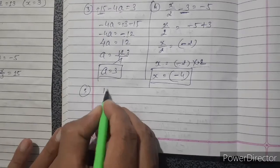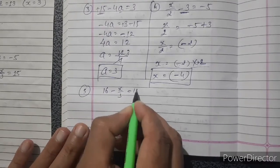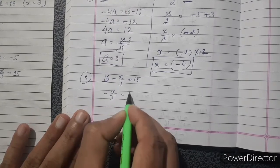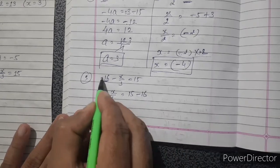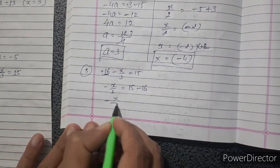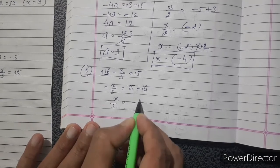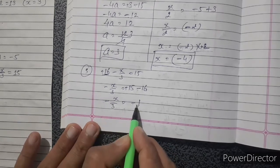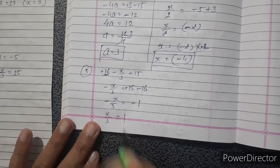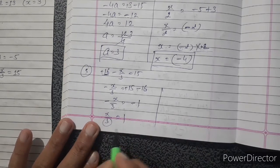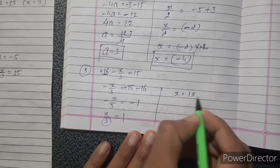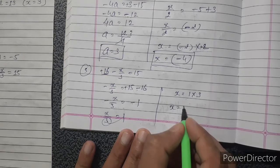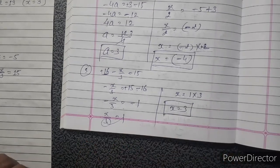Fifth: 16 minus x divided by 3 equals 15. Change the side of 16: minus x divided by 3 equals 15 minus 16, giving minus x divided by 3 equals minus 1. Both sides are minus, so x divided by 3 equals 1. Change side of 3: x equals 1 into 3, so x equals 3.